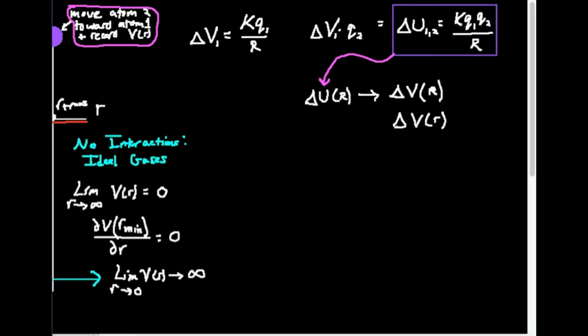Delta U, from a classical physics perspective, is usually what we call potential energy. However, in physical chemistry, delta U is what we call internal energy. So usually to distinguish potential energy from internal energy, the quantum mechanical term for potential energy is delta V. V is what we use for potential energy to distinguish it from internal energy, and the potential energy is always a function of the radius, which is the distance between any two charged species.